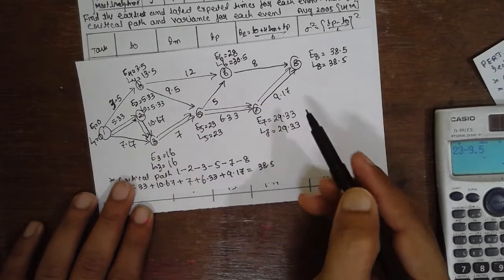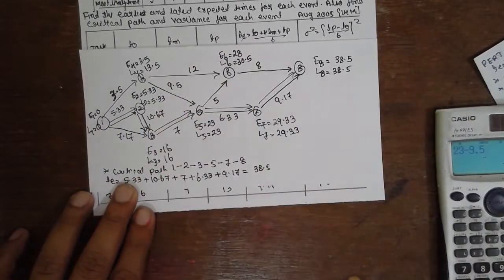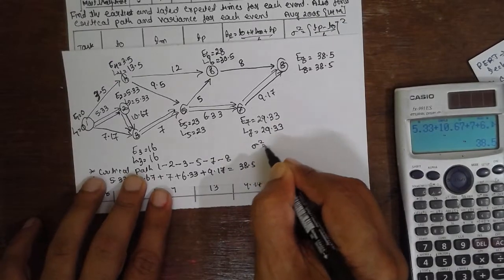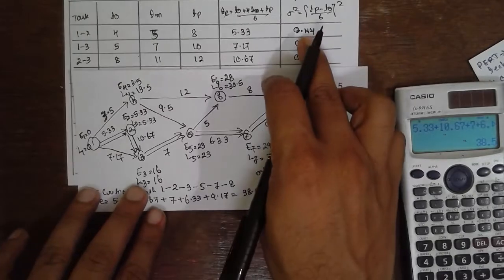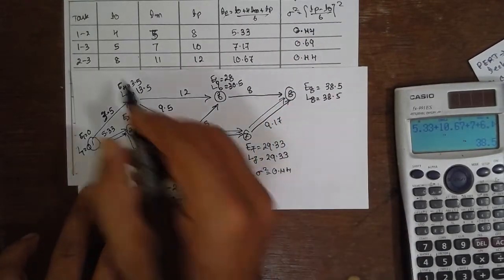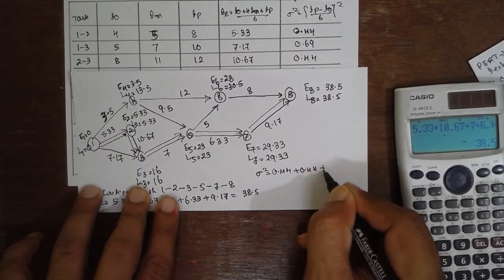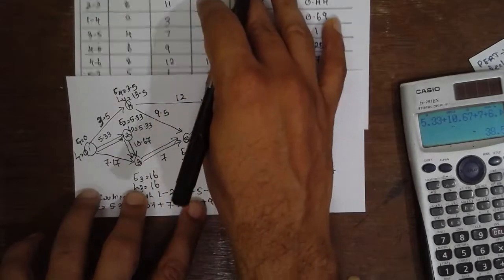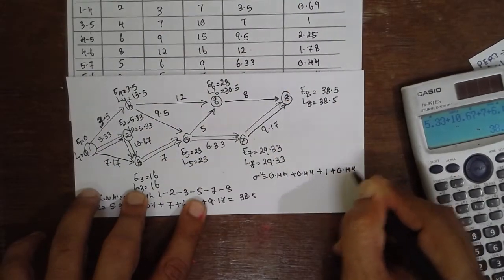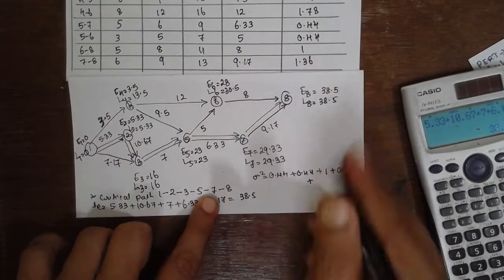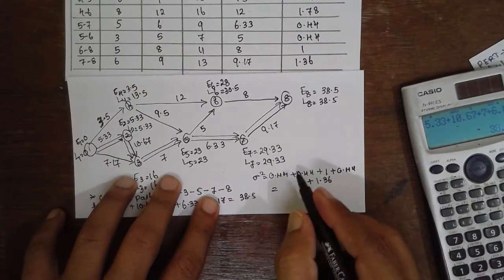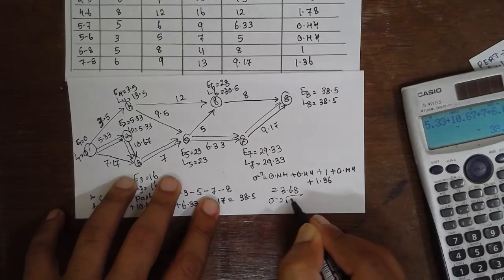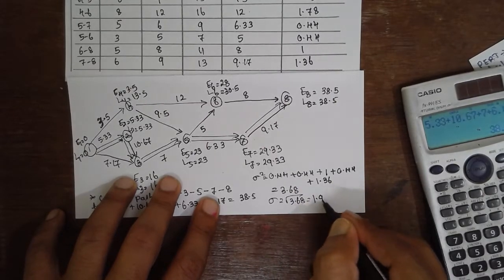Next, find the variance (sigma square) along the critical path. For 1-2: 0.44; 2-3: 0.44; 3-5: 1; 5-7: 0.44; 7-8: 1.36. Total variance = 3.68. Taking the square root gives sigma = 1.918 events.